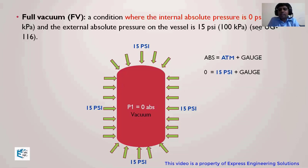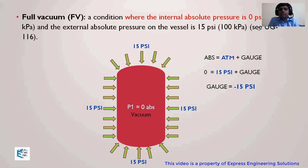Let's put the values for the full vacuum condition: absolute pressure inside is zero, outside is 15 psi. In terms of gauge pressure — if you place a gauge on a vessel under vacuum condition, it will show a negative value, so it is usually expressed as minus 15 psi, or more commonly in mm of Hg or other vacuum units.